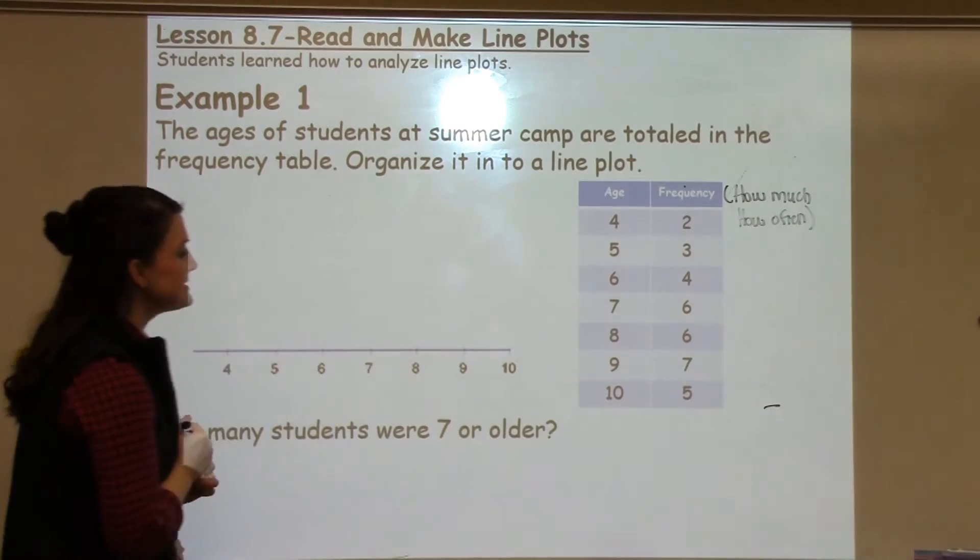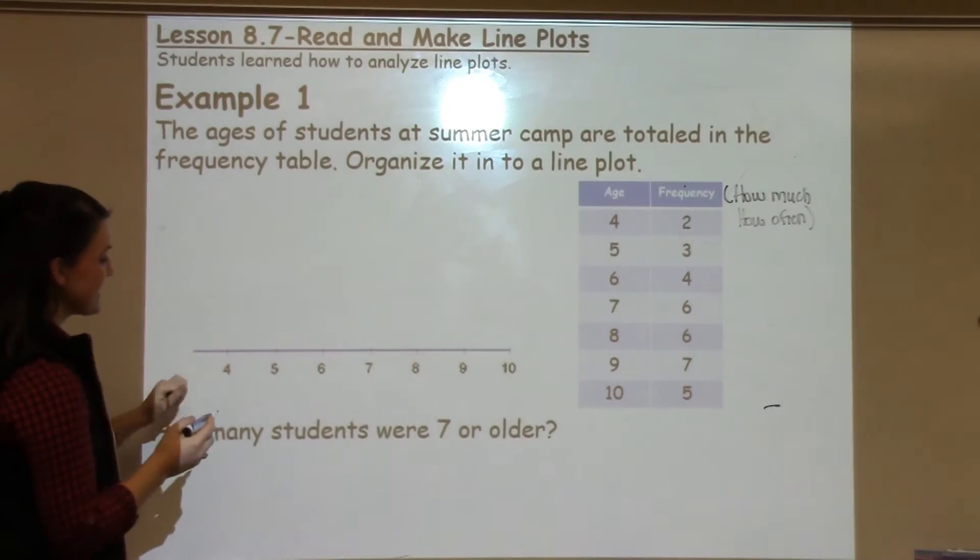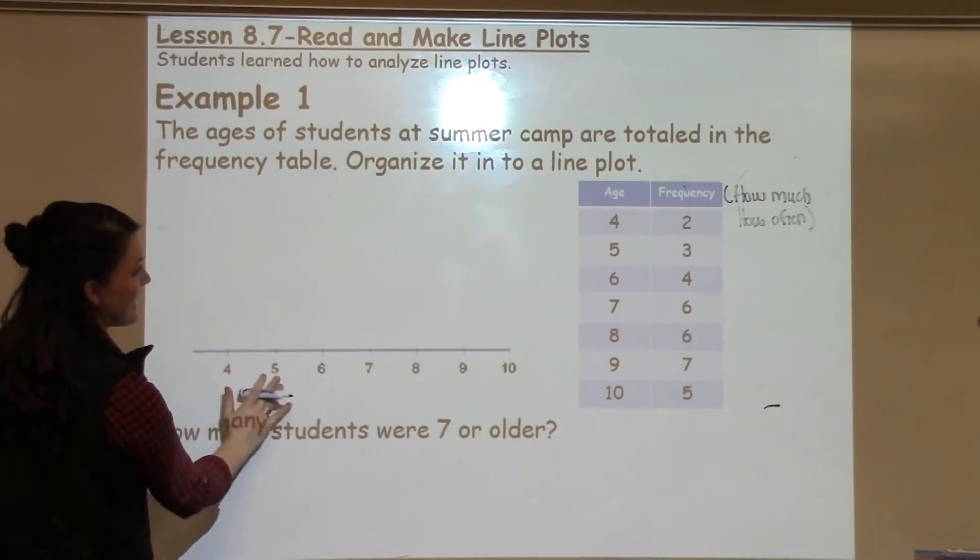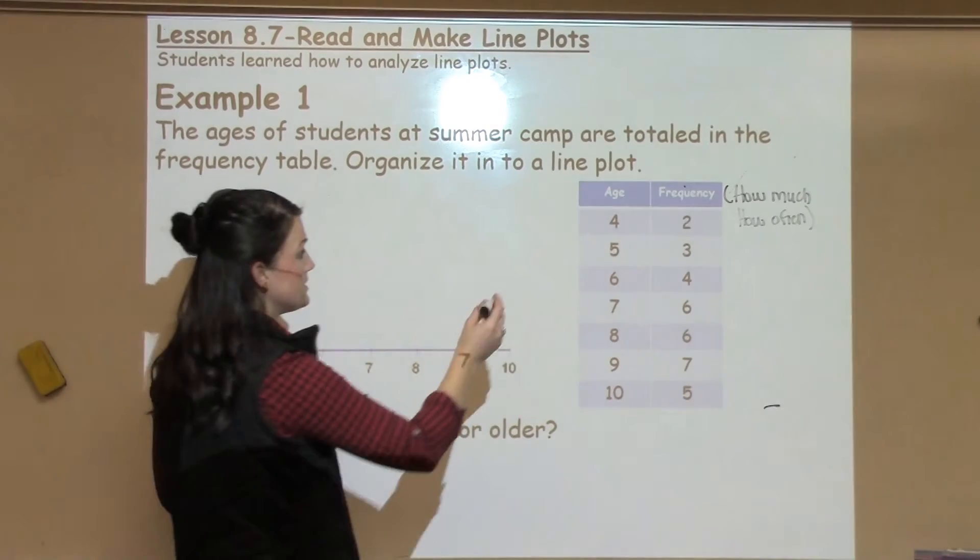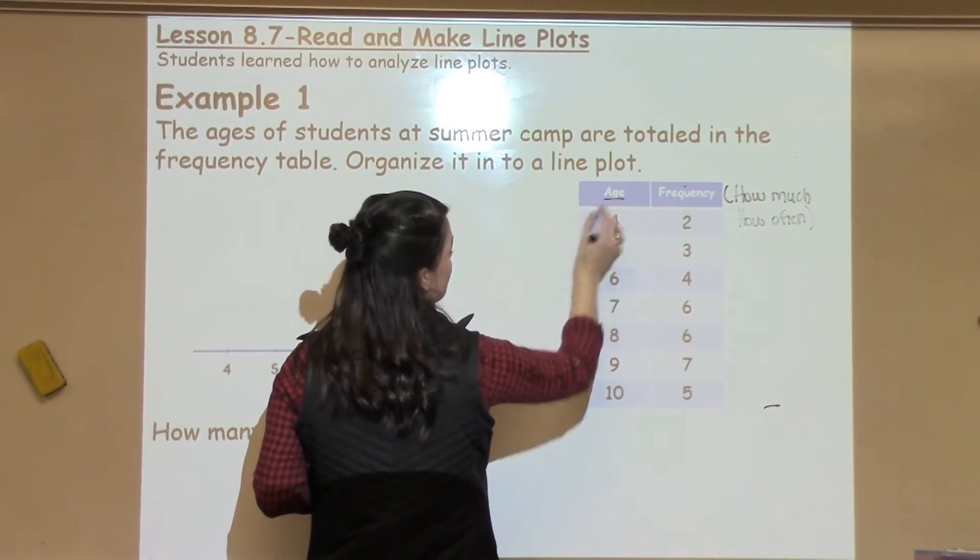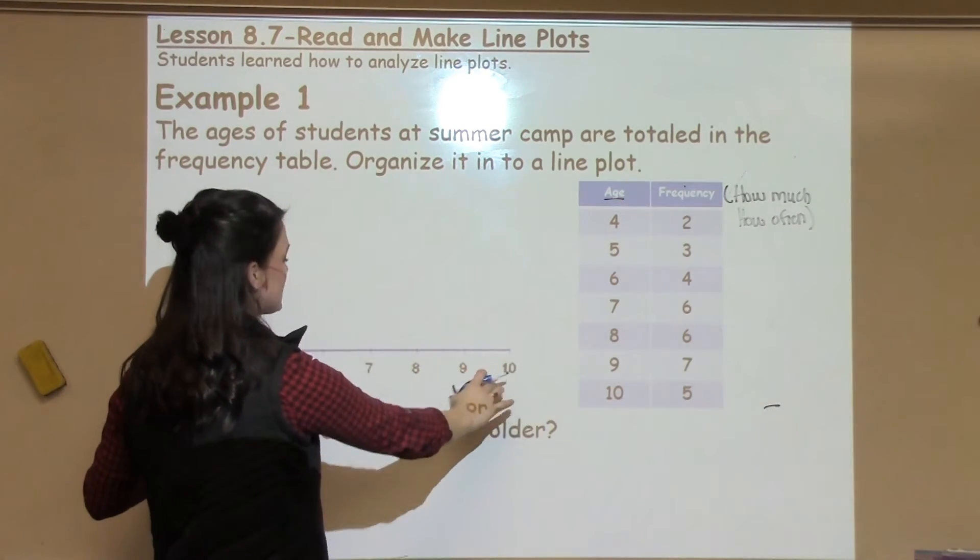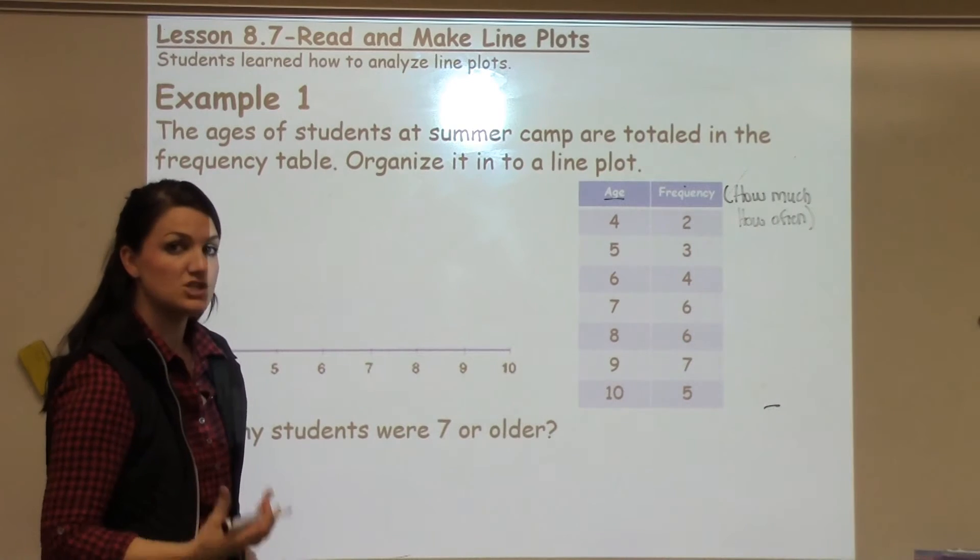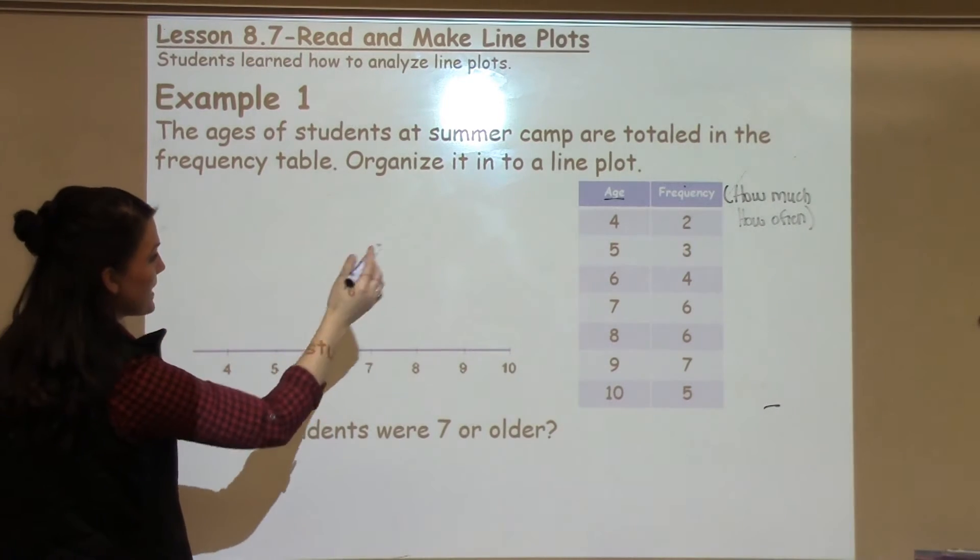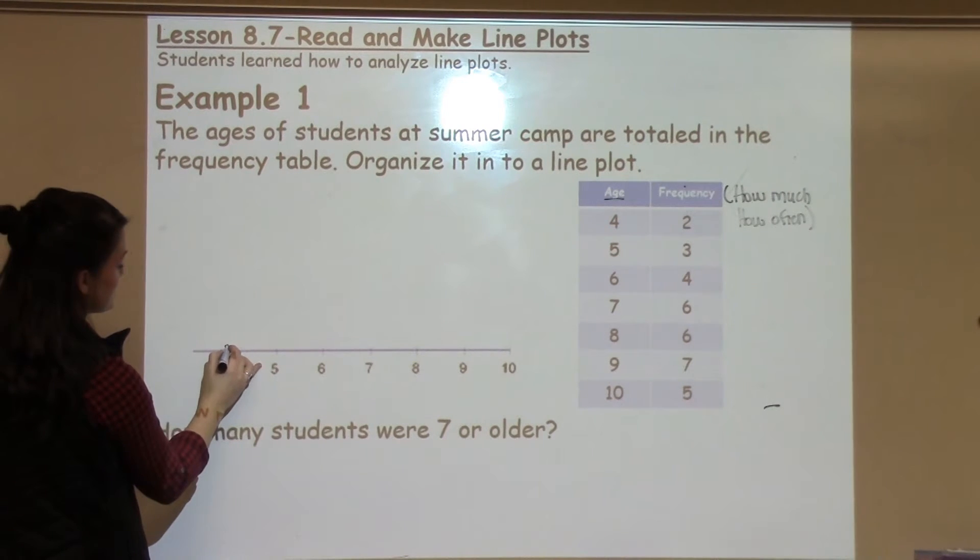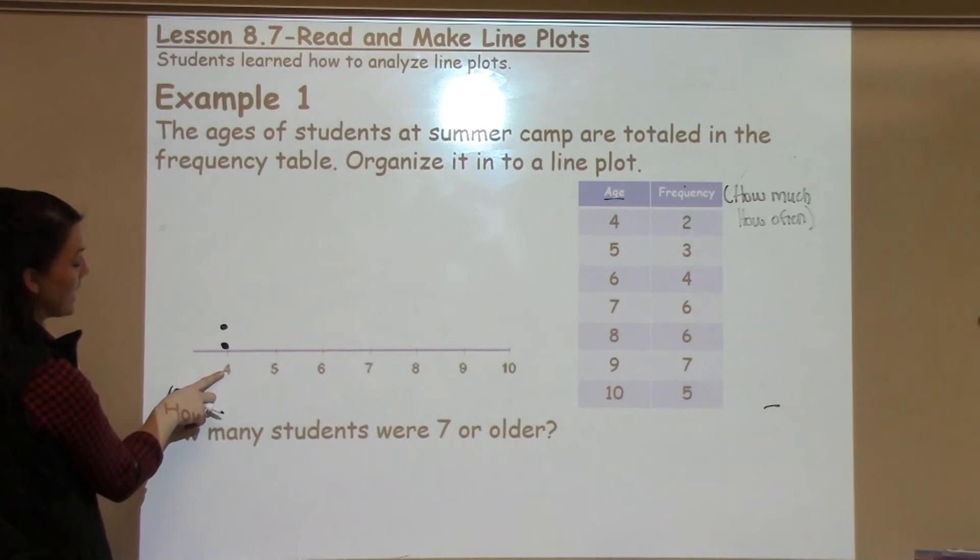So to organize it into a line plot, how I have it here is I just have a line with my ages, all right? My ages or the unit that I'm working with on this side of the table should always be what's on the bottom and the frequency should be what I plot in the points. So if I have four people that are two, that happens twice, I'm just going to plot two points on top of four to show that there are two people that are four years old.